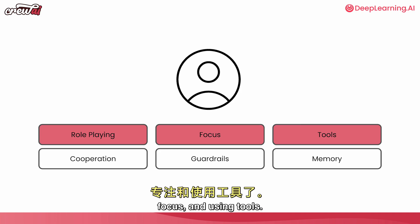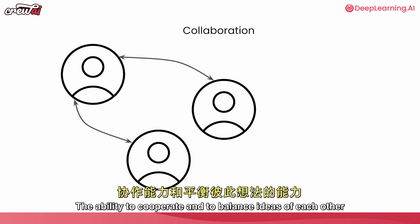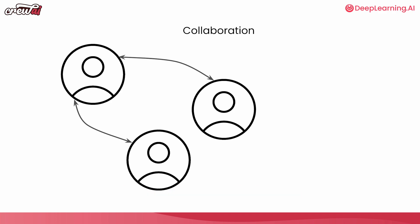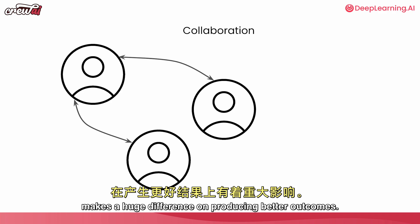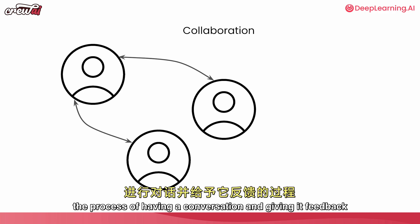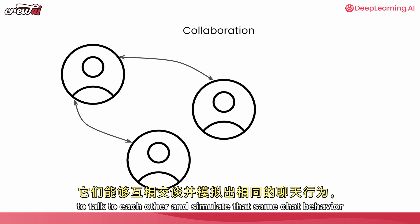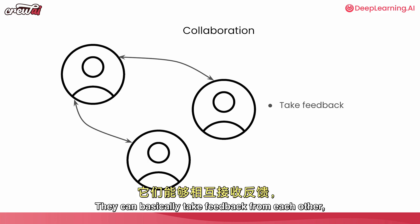Let's talk about cooperation, because that also makes a huge difference. The agents' ability to cooperate and bounce ideas off each other makes a huge difference in producing better outcomes — the same way that when you're talking with ChatGPT, having a conversation and giving it feedback helps it produce a better outcome. The ability for these agents, who are now role playing, to talk to each other and simulate that same chat behavior creates better results.